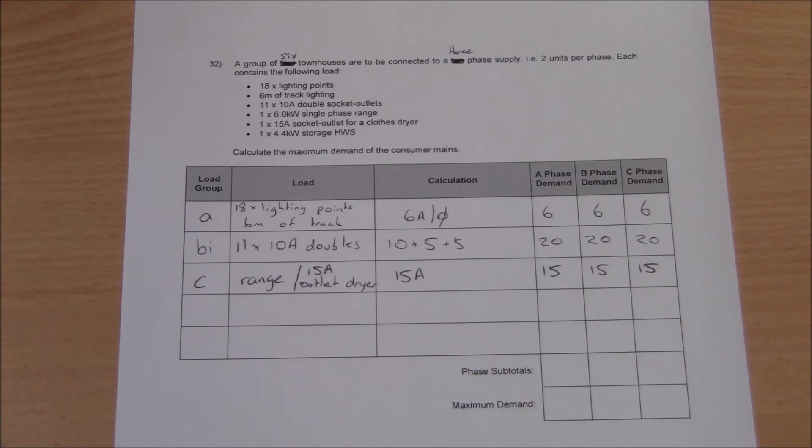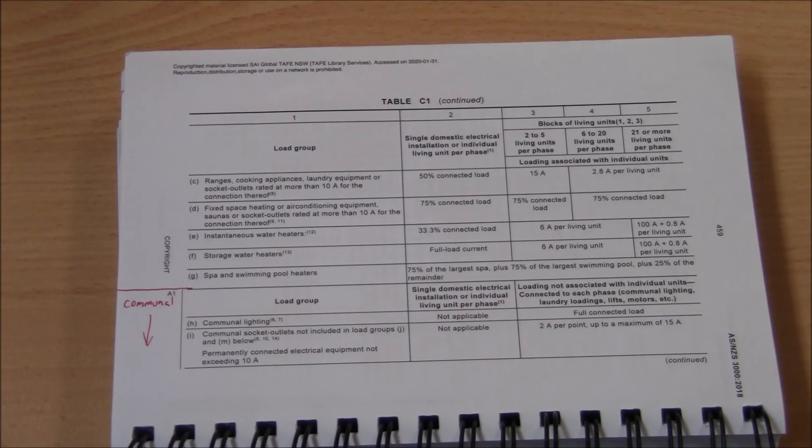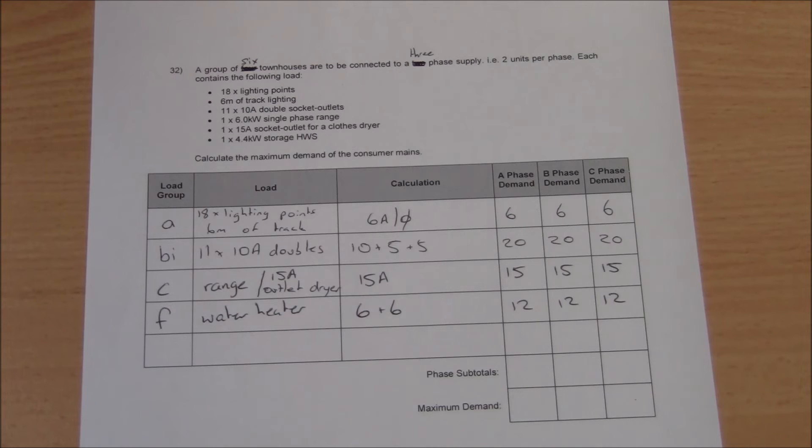Finally, each unit has a 4.4 kilowatt storage water heater. Storage water heaters fall under load group F, and column 3 states we would add a 6 amp per unit per phase contribution. As a result, we will add 12 amps per phase.